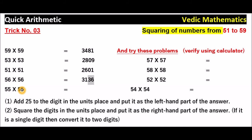Add 25 to 5. Add 25 to 5, it is 30. And 5 into 5 is 25. 3025 is the answer. Now try these problems.